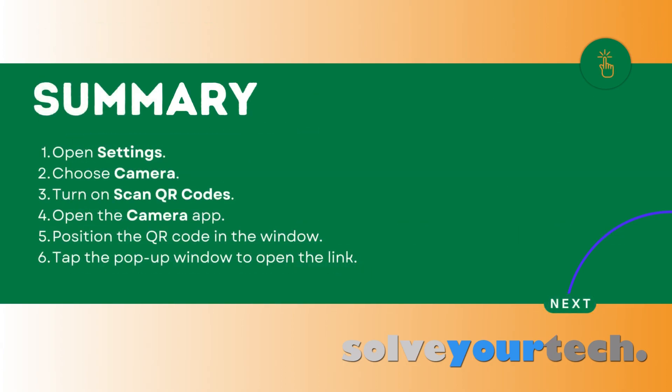To summarize, when you want to scan QR codes on your iPhone, you can open the settings menu, scroll down and choose camera, then tap the button next to Scan QR Codes to turn it on. You can then open the camera app, find the QR code in the window, then tap the pop-up button.